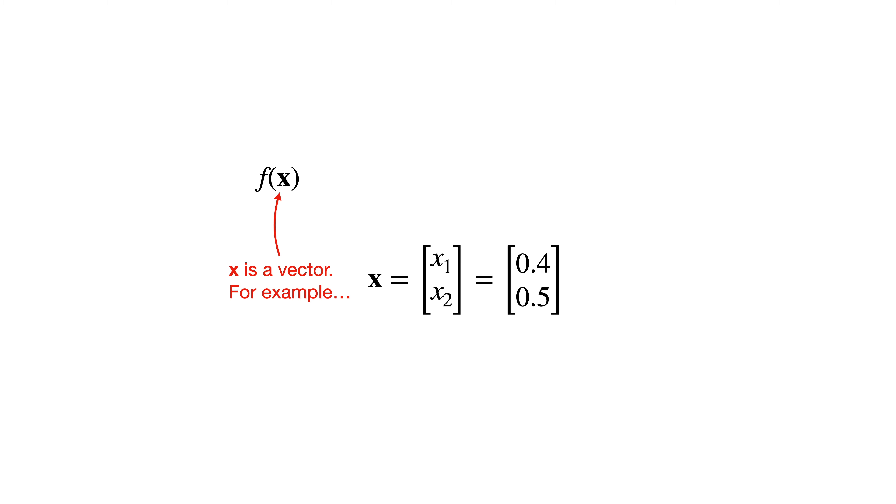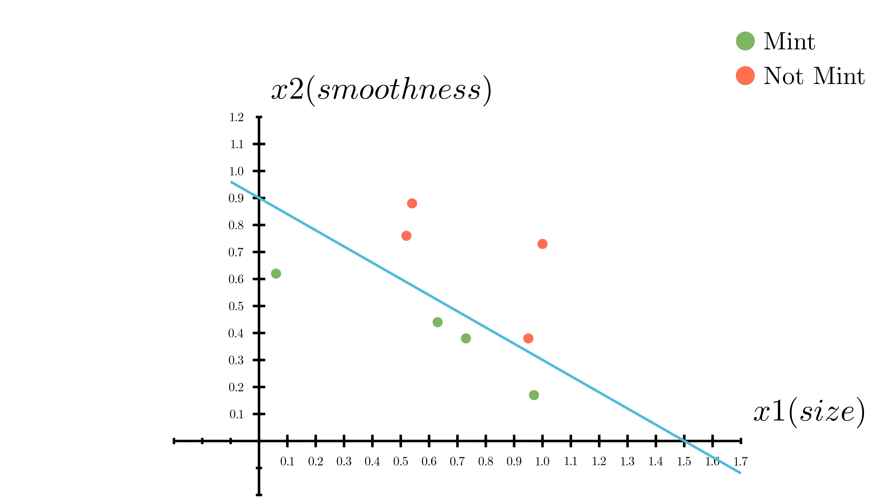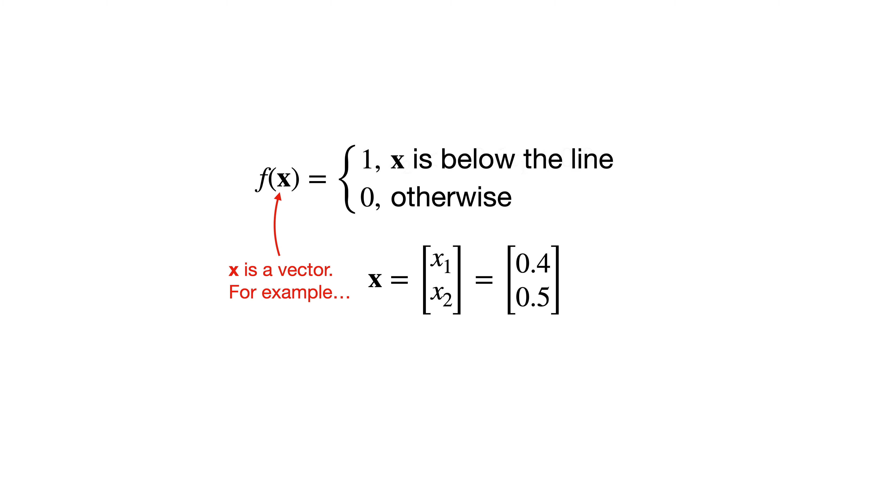So we can say f equals, and then we have two cases, 1 if x is below the line, and 0 if x is on or above the line, which we can simplify as otherwise. Note here that x is in bold to signify it's a vector of features, x1, x2. Now we have to formalize what it means to be below the line. Well, the line I drew here corresponds to the equation x2 equals negative 0.6 times x1 plus 0.9. For point x1, x2 to be below the line means that x2 is less than negative 0.6 times x1 plus 0.9.